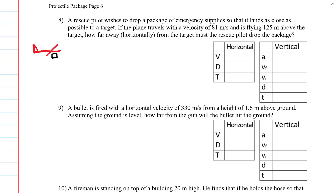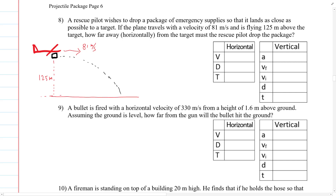So there's my picture of my plane and my package that's being dropped. The plane is traveling forward at 81 meters per second and it's at a height of 125 meters. When it releases the package, it's going to follow a curved path, and we want to know what this horizontal distance is.